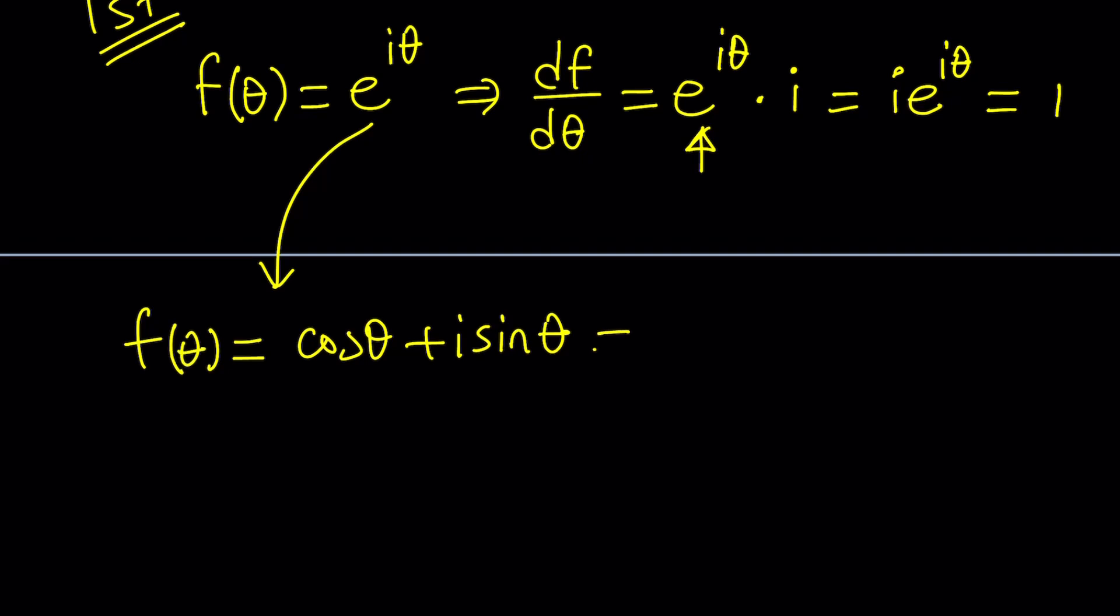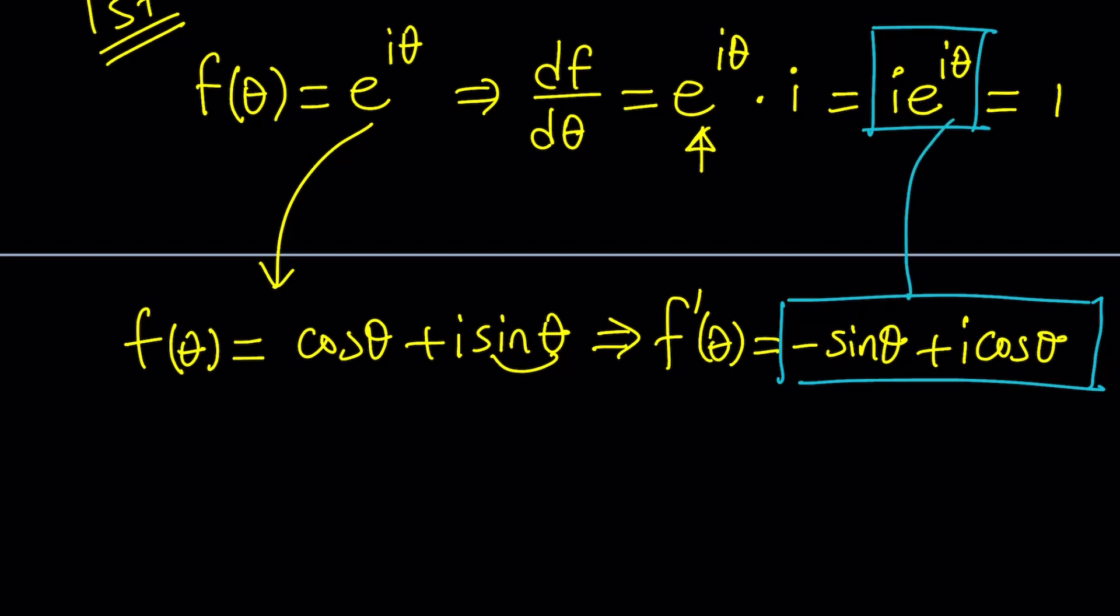We can differentiate this too because it should give us the same thing. Let's go ahead and differentiate it then with respect to theta. The derivative of cosine θ is going to be negative sine θ. And the derivative of sine is cosine, but with the constant i, it's just going to be i cosine θ. This is f prime, and this is also f prime, which means these two things are equal.